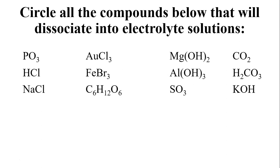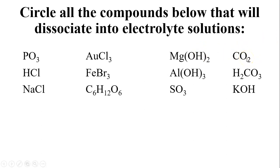Let's determine whether compounds dissociate in water. PO3 is a covalent compound — phosphorus and oxygen are both nonmetals — so it will not dissociate. Gold three chloride: gold is a metal and chlorine is a nonmetal, so it's ionic and will dissociate, becoming an electrolyte. Magnesium hydroxide is a base — it has that hydroxide on the end — so it will dissociate. Carbon dioxide is covalent and will not form an electrolyte.